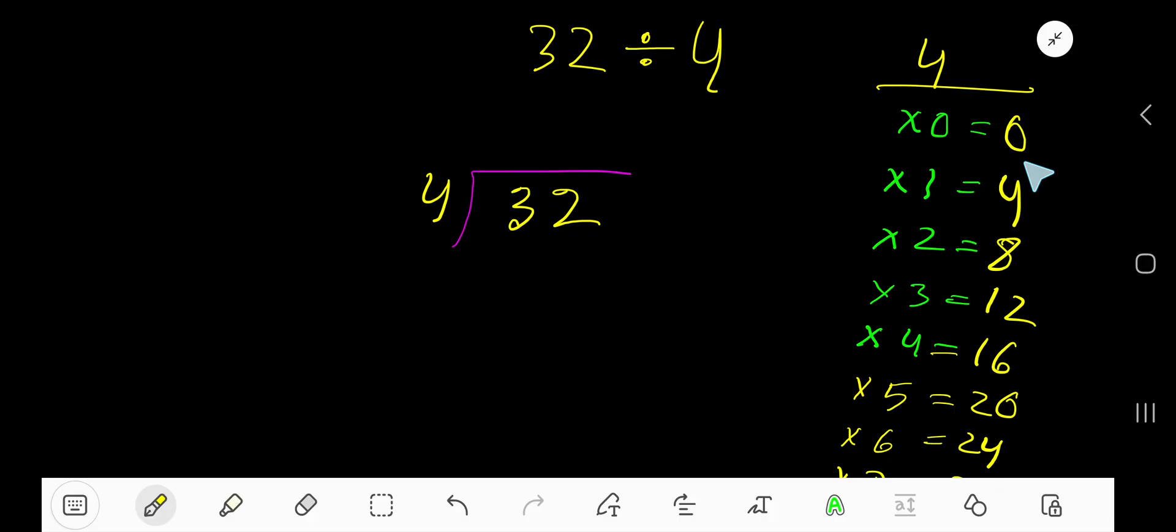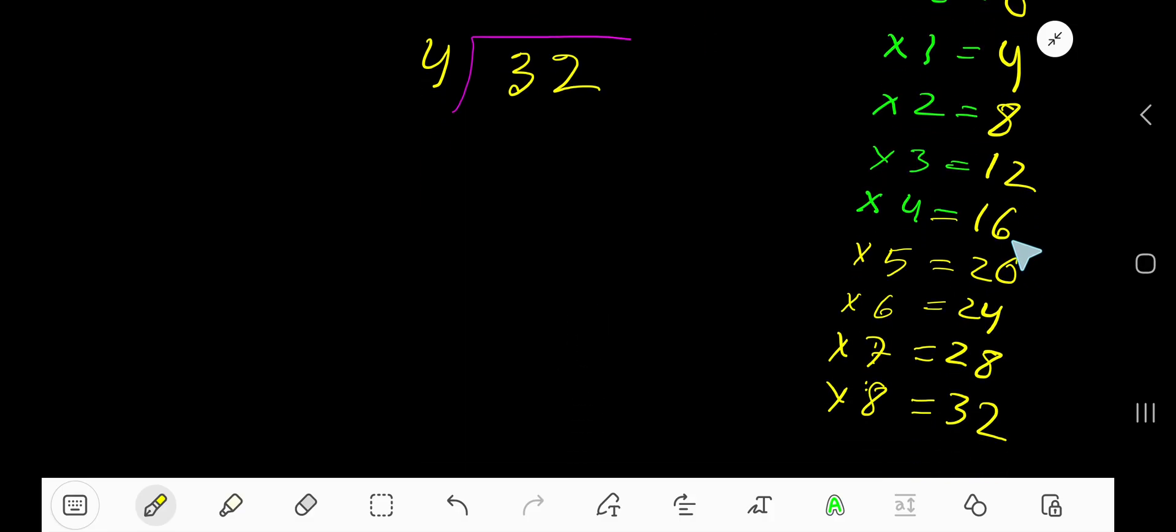Just add 4 with the previous step. 0 plus 4 is 4. 4 plus 4 is 8. 8 plus 4 is 12. 12 plus 4 is 16.